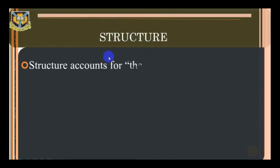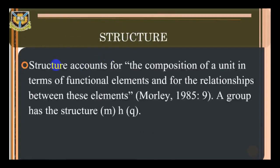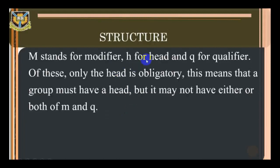Structure: structure accounts for the composition of a unit in terms of functional elements, and for the relationship between these elements. A group has the structure M, H, Q — that is, modifier, head, and qualifier. M stands for modifier, H for head, and Q for qualifier. Of these, only the head is obligatory, meaning a group must have a head but may not have either a modifier or a qualifier.